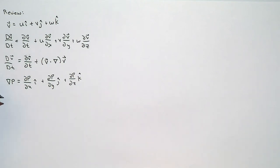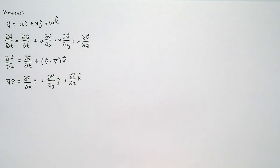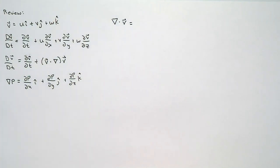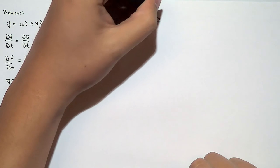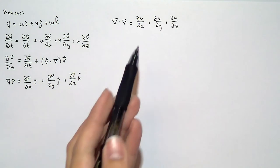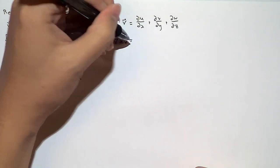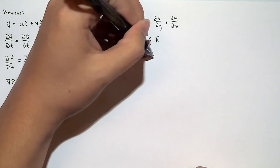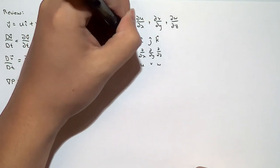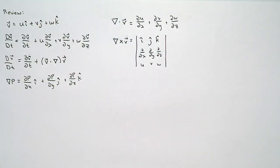There are other operations for which we can use the del operator. One of those operations was the divergence of a vector field, where we define the divergence as the sum of the three derivatives in the x, y, and z directions respectively. So the divergence of the velocity vector would look like this. This divergence of the velocity vector is what we call the dilatation rate. We also know that we can find the curl of a vector field, and the curl of the velocity field is what we call vorticity.